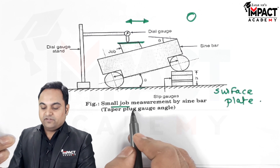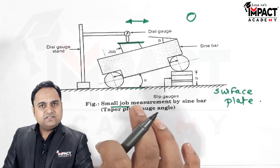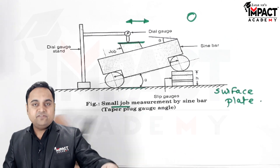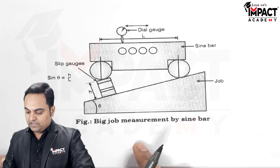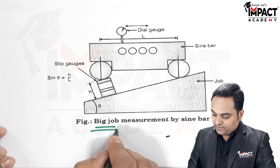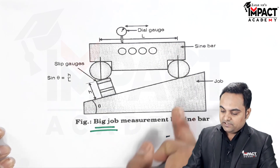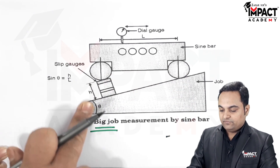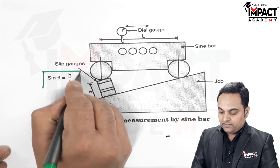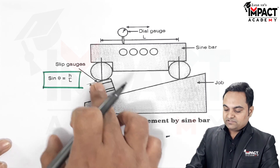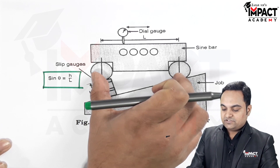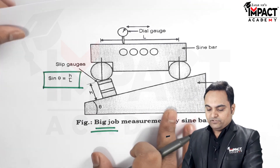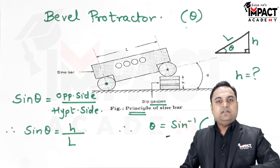Similarly, if the workpiece is bigger, the sine bar is kept on the workpiece itself. The arrangement is such that we obtain the height of the slip gauges, and using the formula sine theta equals H over L — once the height has been adjusted and the center distance L is known — we can easily find the value of theta.